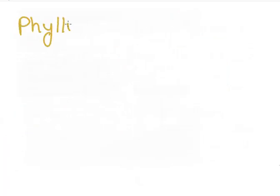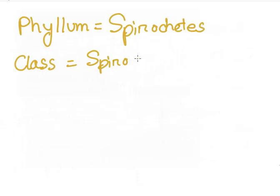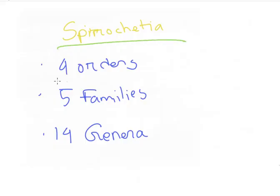Spirochetes belong to the phylum Spirochetes under class Spirocheteia. This class currently consists of 14 validly named genera, 4 orders and 5 families.